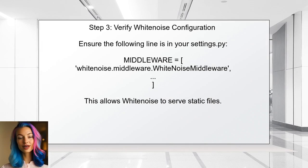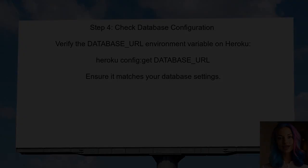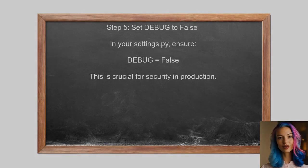Also verify that the WhiteNoise middleware is correctly configured in the settings.py file — this is essential for serving static files in production. Additionally, check the database configuration and ensure that the database URL is correctly set in the environment variables on Heroku. Finally, set the DEBUG setting to False in the settings.py file, which is important for production environments to avoid exposing sensitive information.